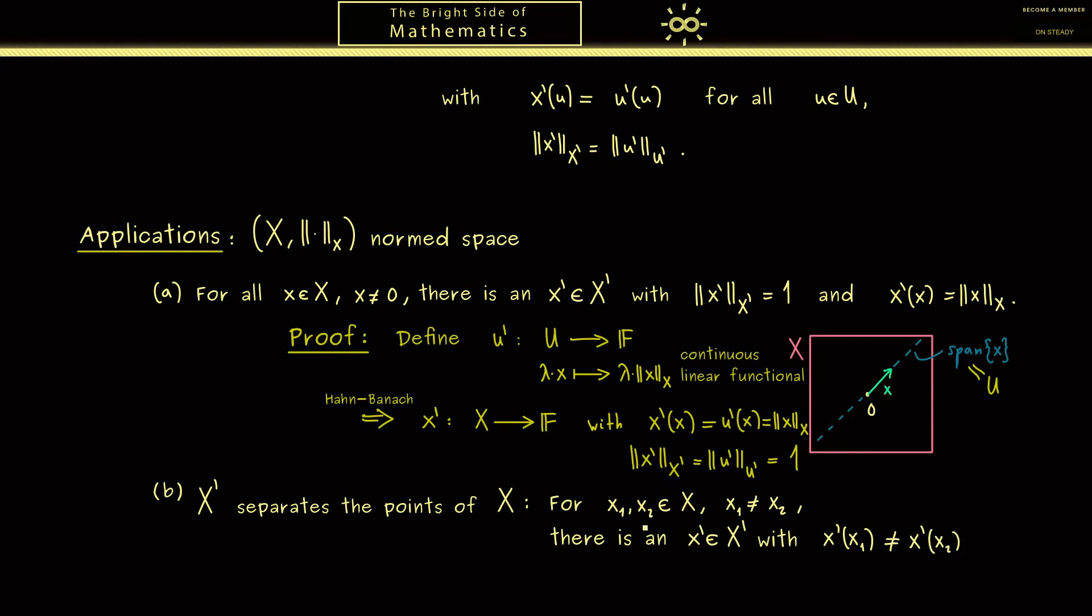Since this holds no matter which points you choose, the dual space X' still holds the whole information about what are the different points in X. In order to prove this I already told you we can just use (a).